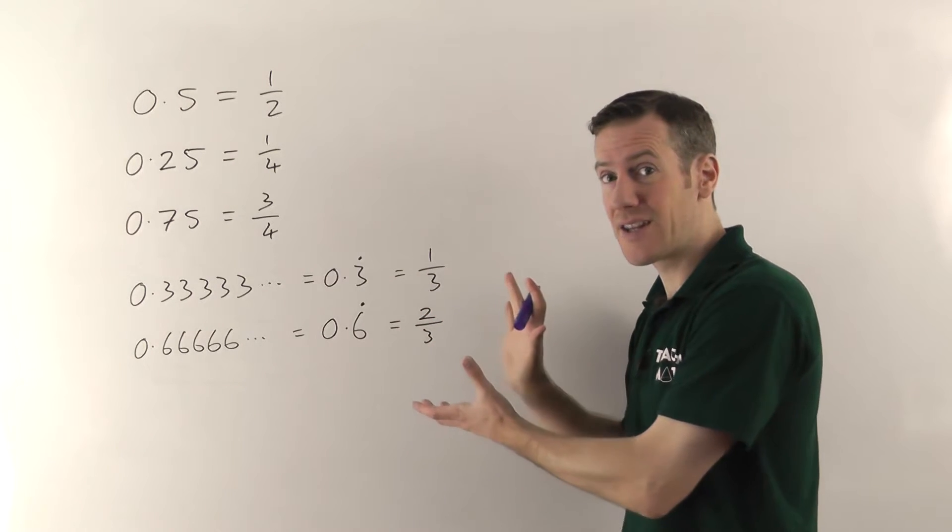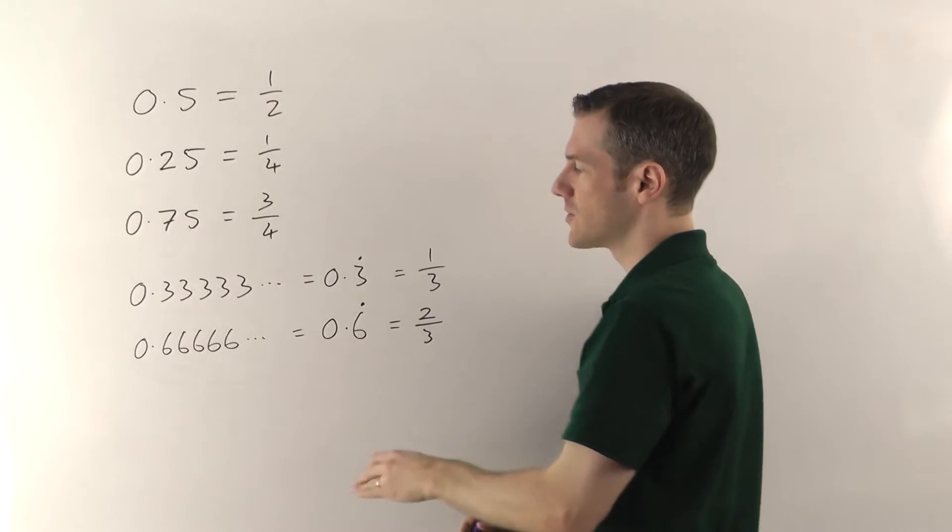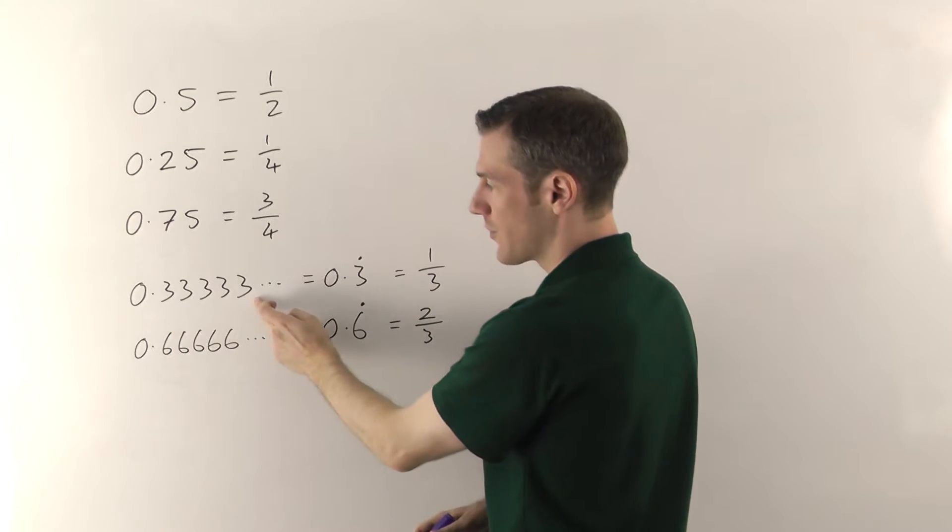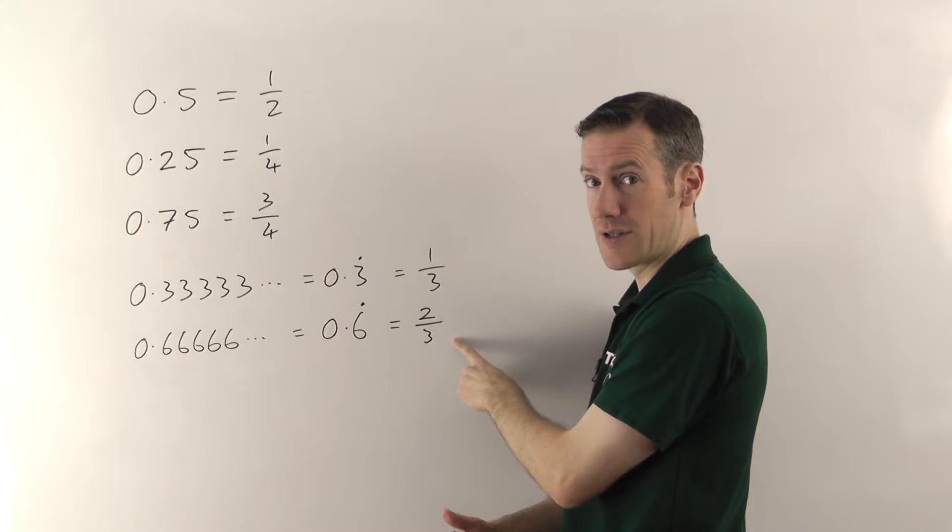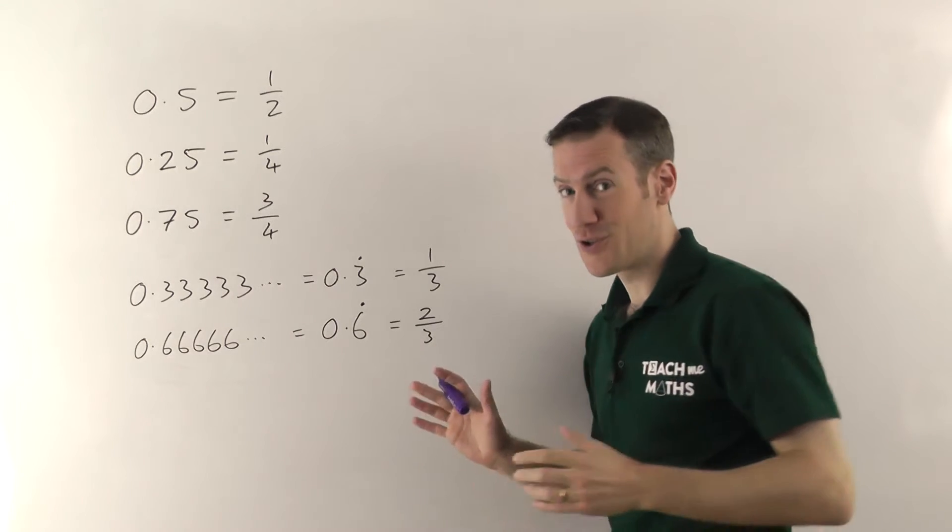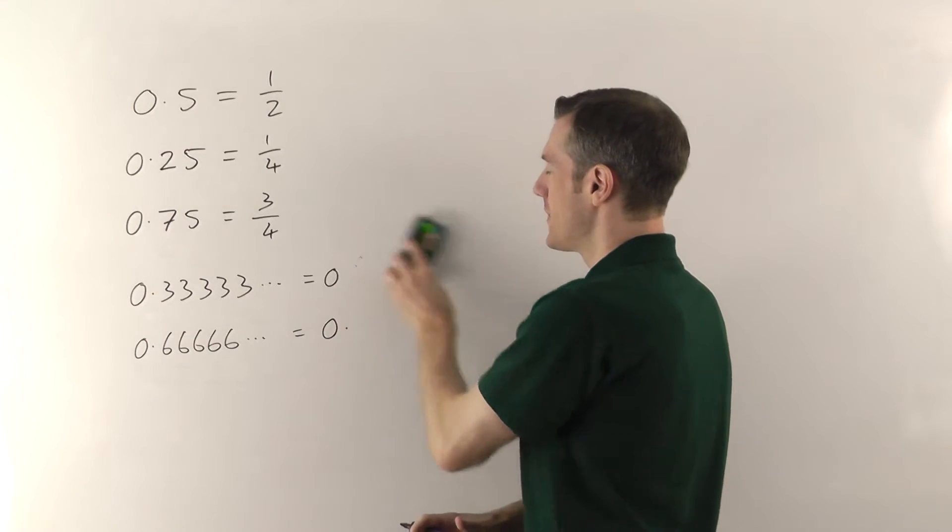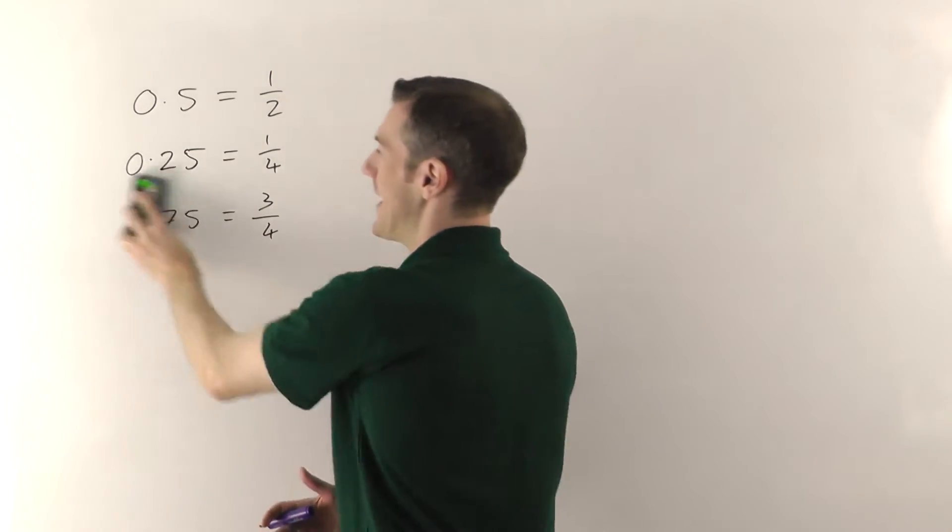So those are the set of standard ones that I think you should know off by heart. As I say, most of you already know those. You might not be familiar with these last two. So just remember, 0.3 recurring is a third, and 0.6 recurring is 2 thirds. They do come up quite a lot. You should learn those. Alright, so those are the basic ones, but then how do you actually work out what any old random decimal number is as a fraction?